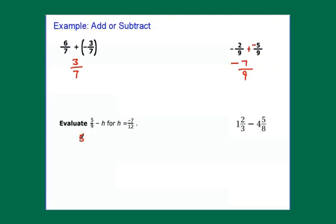For the next problem, I have 5 ninths minus h, so that's 5 ninths minus negative 7 twelfths. Don't even mess with the subtraction. Change that to plus positive 7 twelfths. Now I have 9 and 12. Common denominator here, I could do 9 times 12 and get 108 but then I'm going to have to simplify a lot at the end. The least common denominator here is 36. I can take 9 goes into 36, 12 goes into 36.